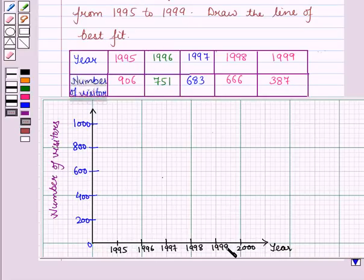Here we have to make a prediction, so we have increased the number of years. Let us plot all these ordered pairs on this graph.